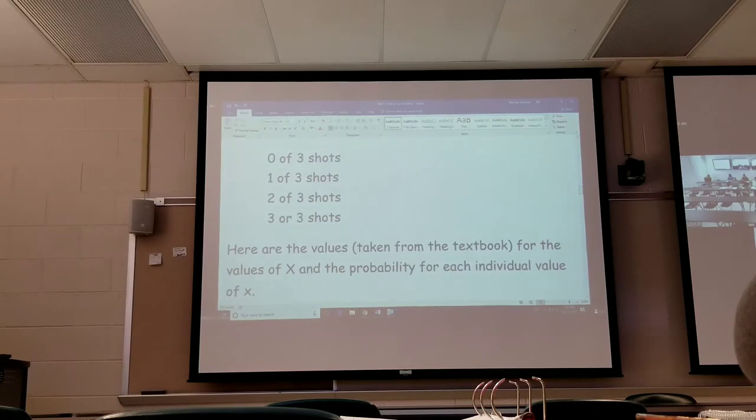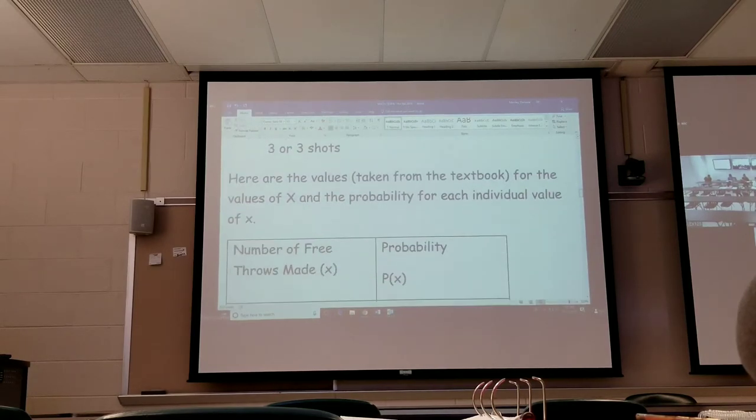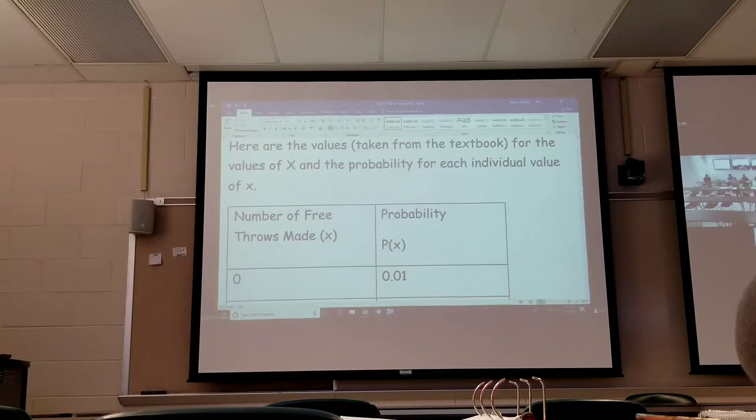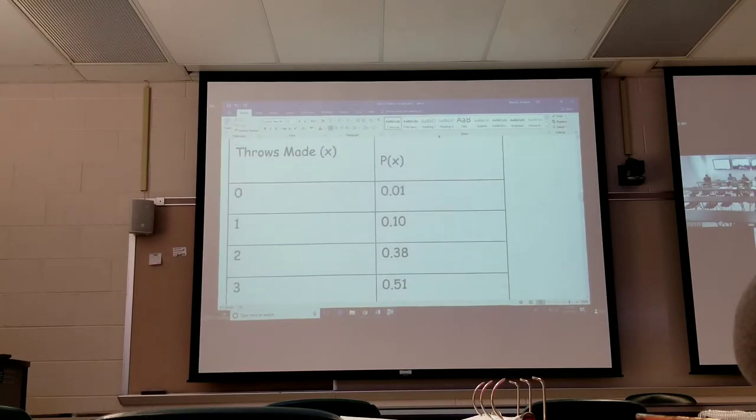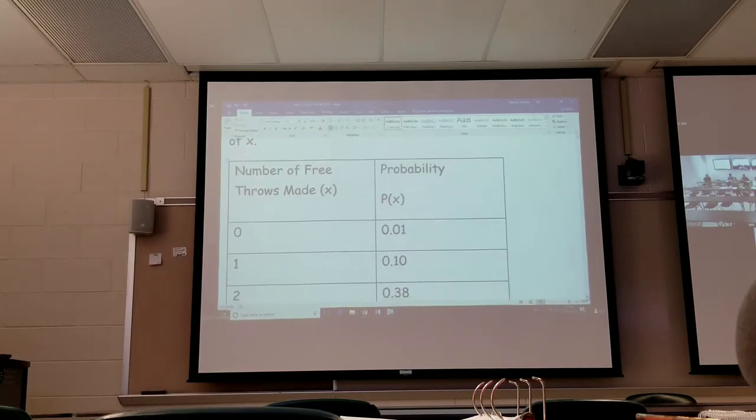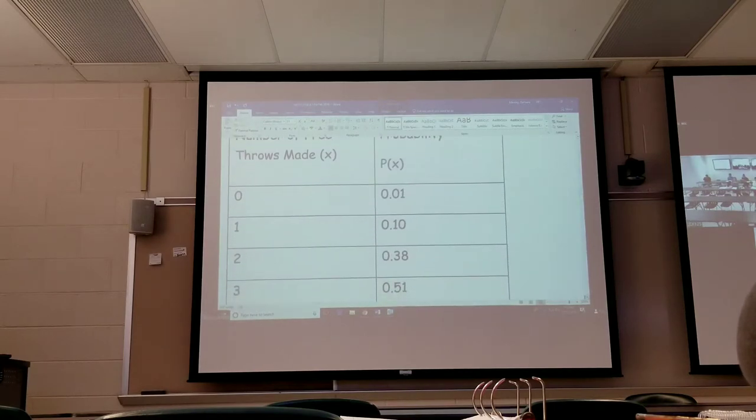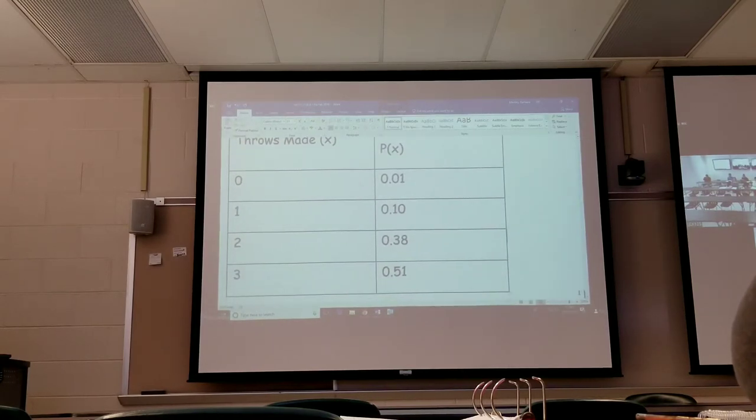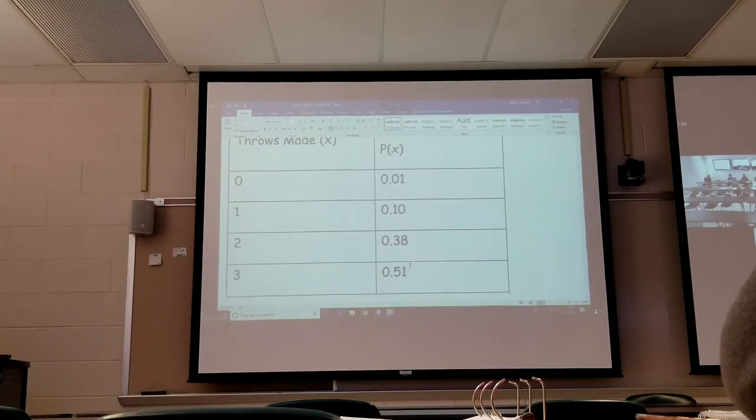Here are the values taken from the textbook for the values of X for this person and each individual value of X. The probability that this player makes none of the three free throws is 0.01. The probability of making one of the three is 0.10 or 10%. Two of the three is 0.38 or 38%. Three of the three is 0.51 or 51%.